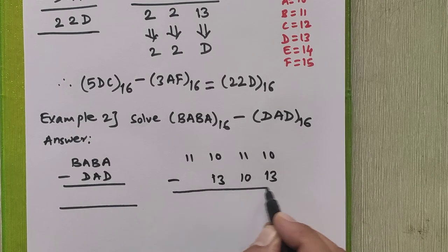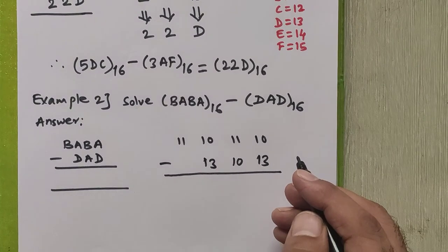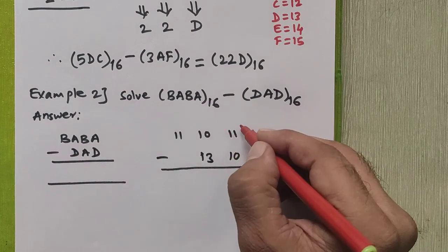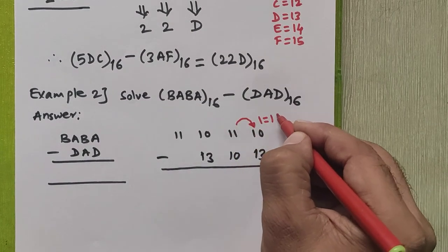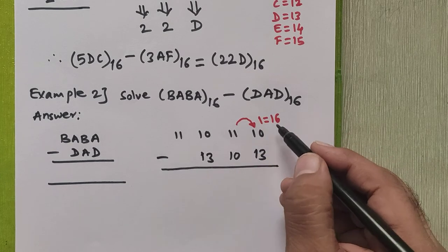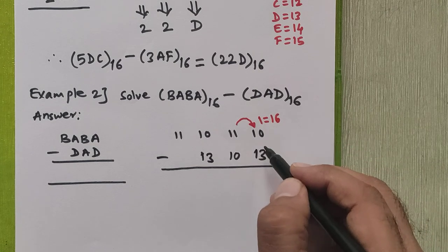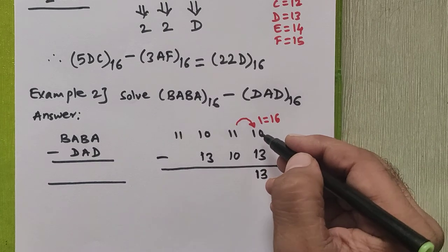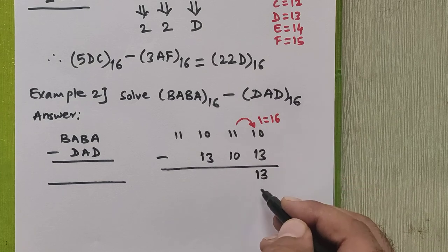Starting from the rightmost column: 10 minus 13 is not possible, so we take a borrow from the next position. One borrow equals 16 in this number system. 16 plus 10 is 26, and 26 minus 13 equals 13.